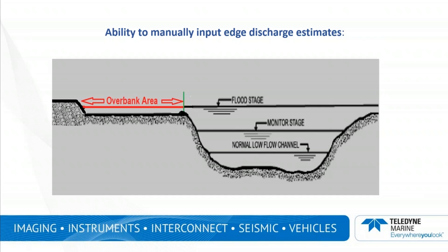This may be because the overbank is very shallow. If the main channel is measured using WinRiver 2 version 2.22, it is now possible to add the discharge of the overbank area to the main channel discharge. This will result in the summed discharge being available in the F12 file and also the discharge measurement summary.